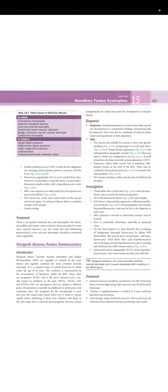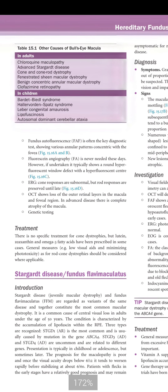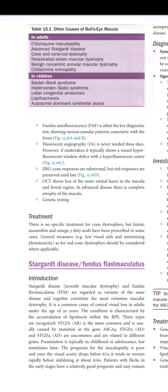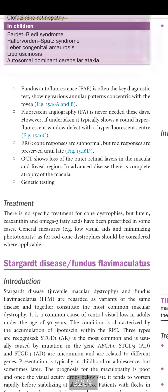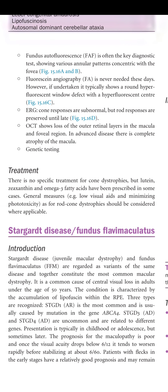This is the lecture series, chapter 15: Hereditary Fundus Dystrophy, Part Four. In this part we are going to discuss Stargardt disease or fundus flavimaculatus. Stargardt disease or juvenile macular dystrophy and fundus flavimaculatus (FFM) are regarded as variants of the same disease, and together constitute the most common macular dystrophy.